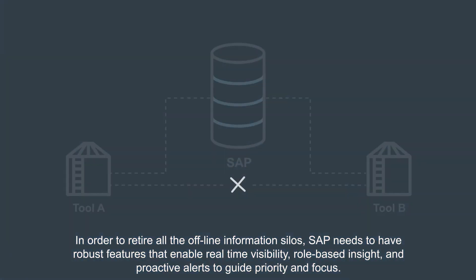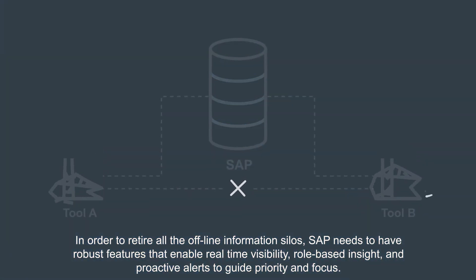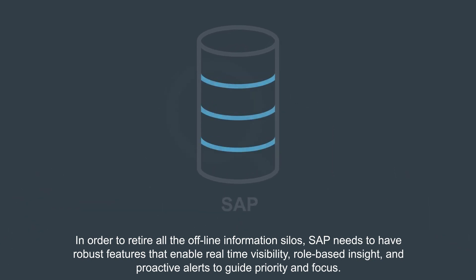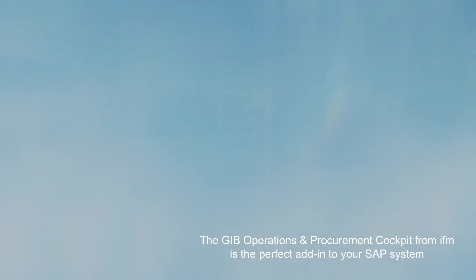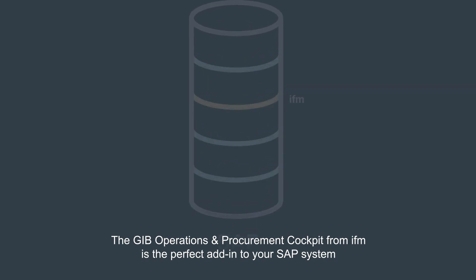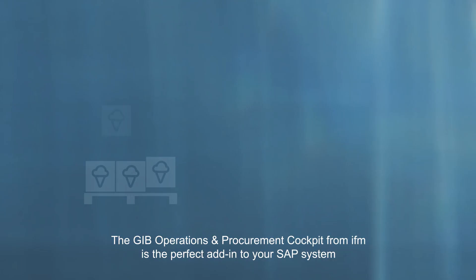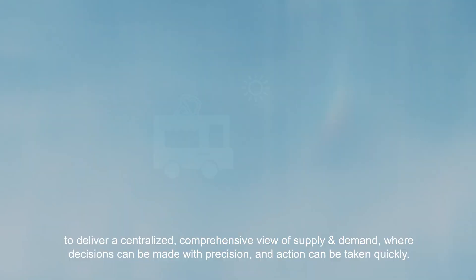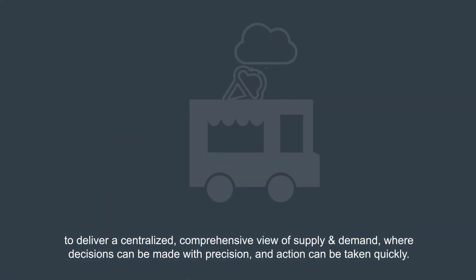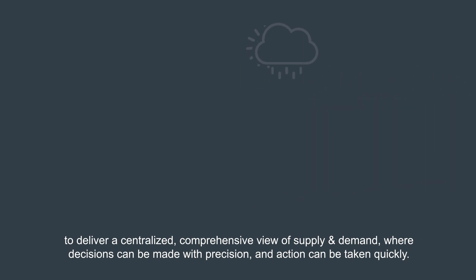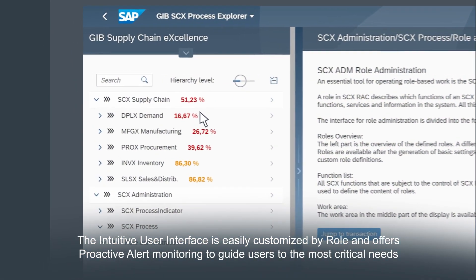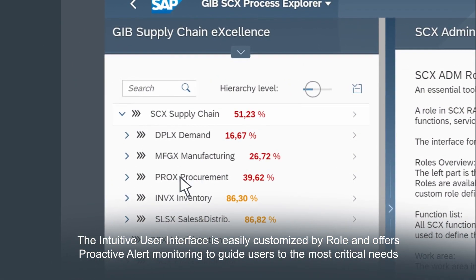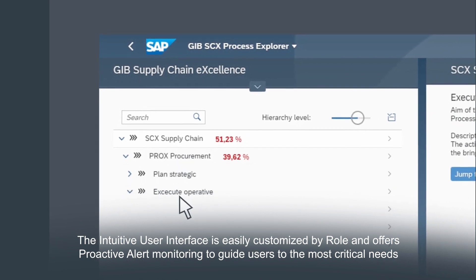In order to retire all the offline information silos, SAP needs to have robust features that enable real-time visibility, role-based insight, and proactive alerts to guide priority and focus. The GIB Operations and Procurement Cockpit from IFM is the perfect add-in to your SAP system to deliver a centralized, comprehensive view of supply and demand, where decisions can be made with precision and action can be taken quickly.